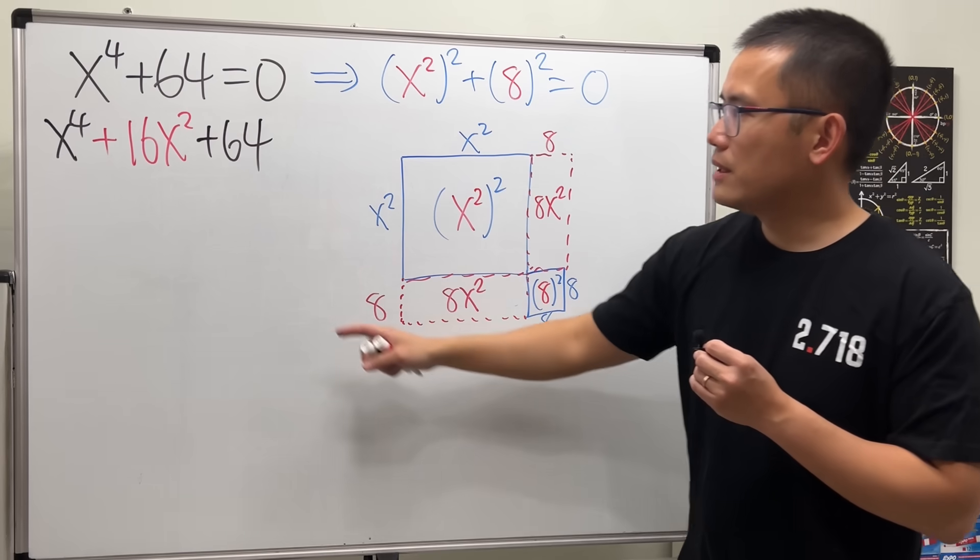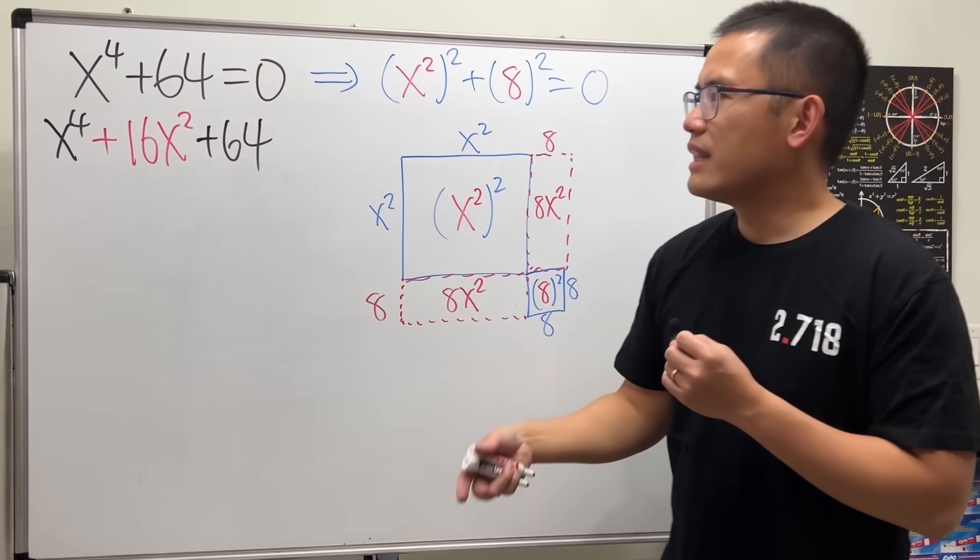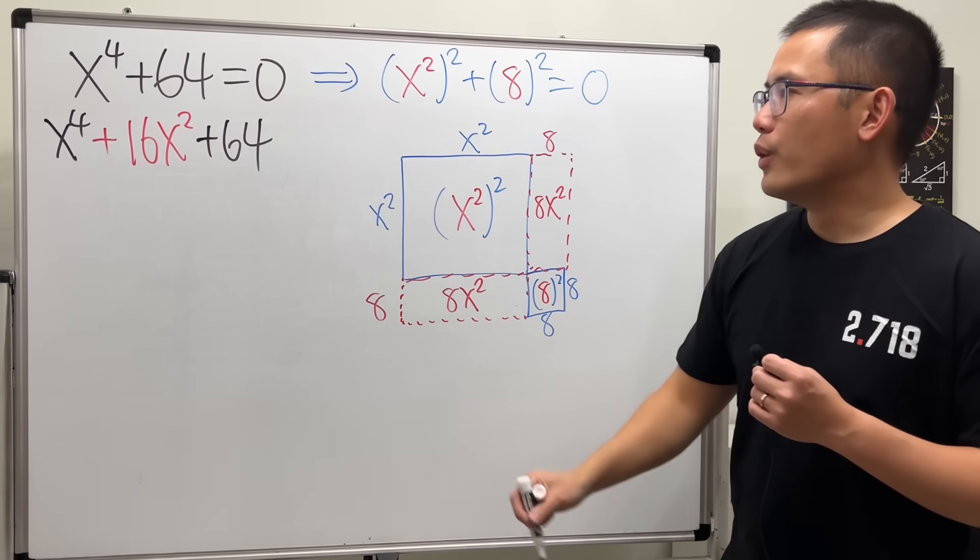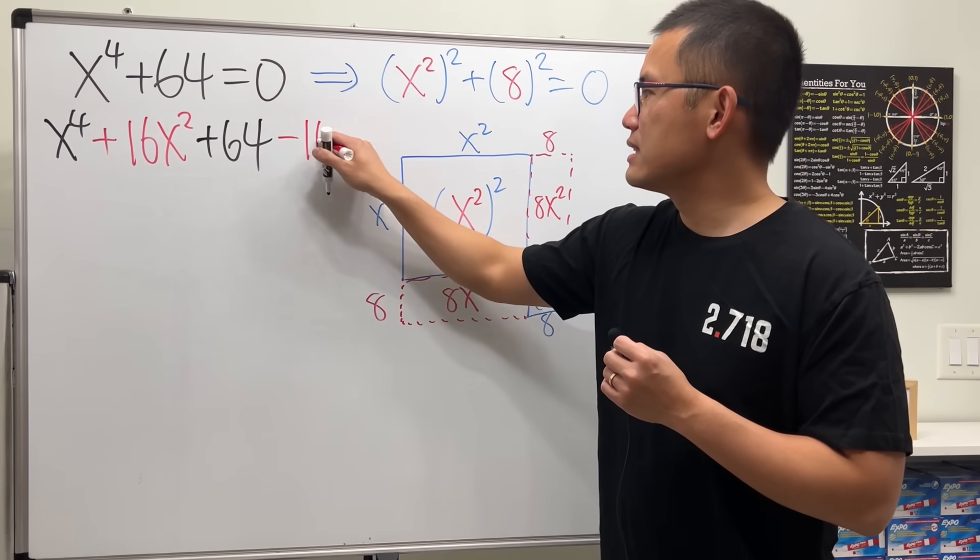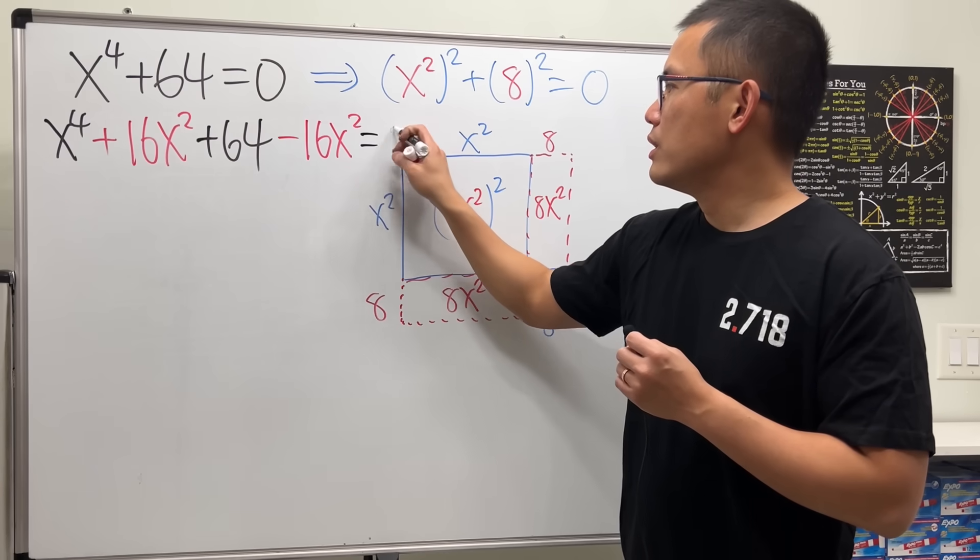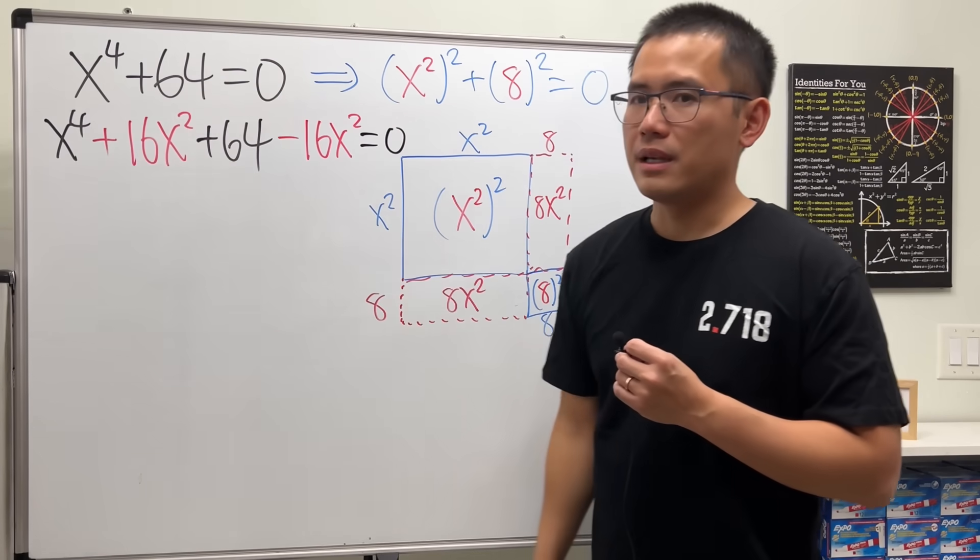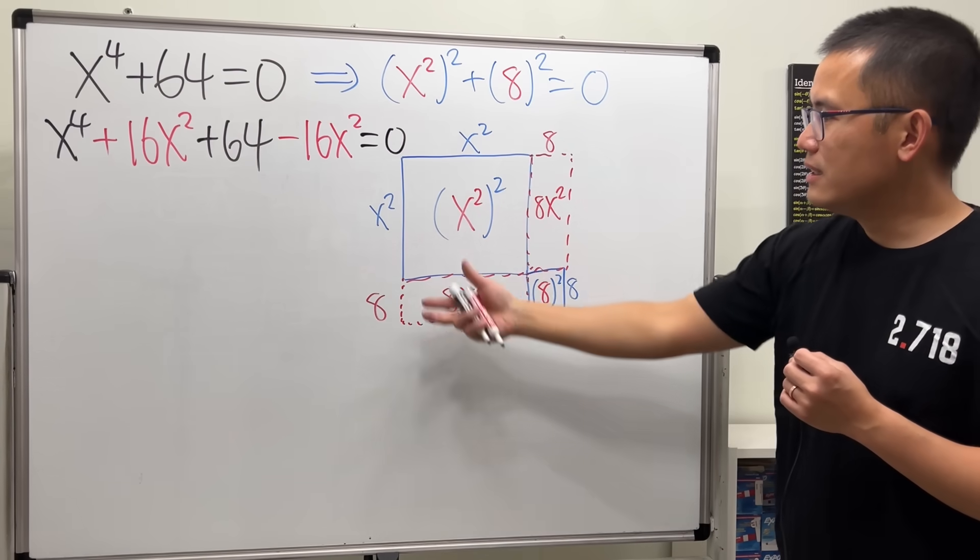And of course, if I just add 16x squared, that changes the whole thing. So, we will have to subtract 16x squared in order to be the same as the original.